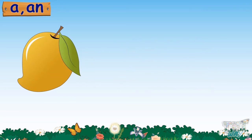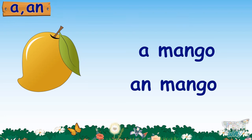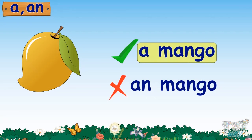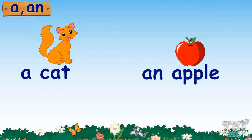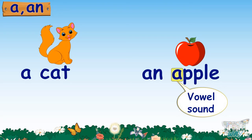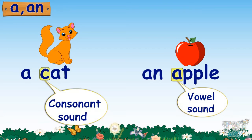Next example. What is this? Again, this is a single object, so we will use 'a' or 'an' before it. It starts with the sound of M, so we will choose 'a' and say: this is a mango. We learned that we use 'a' or 'an' before a singular naming word. The rule for using 'an' is that the naming word should begin with a vowel sound, and the rule for using 'a' is that the naming word should begin with a consonant sound.